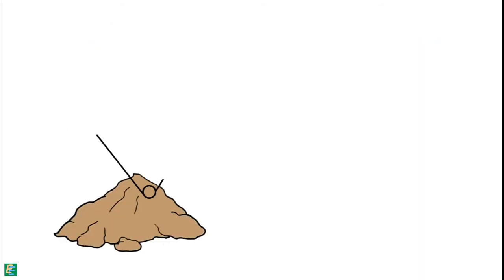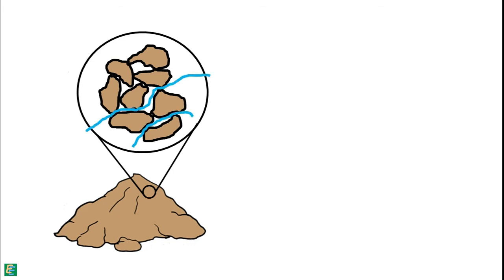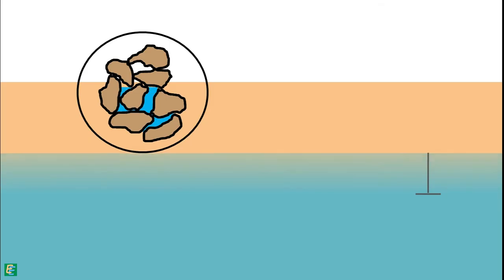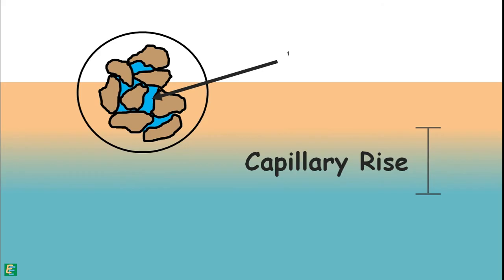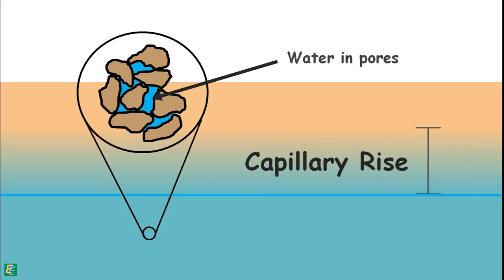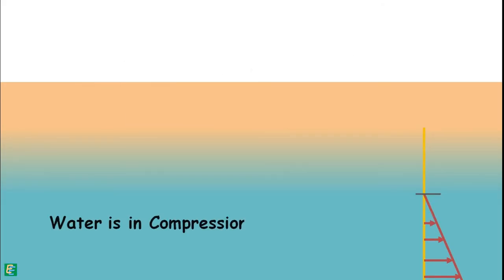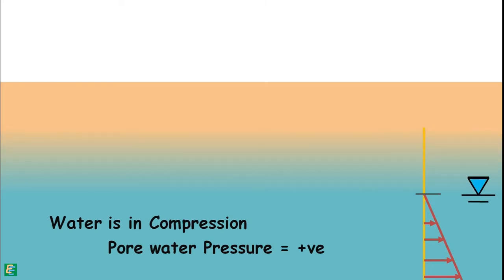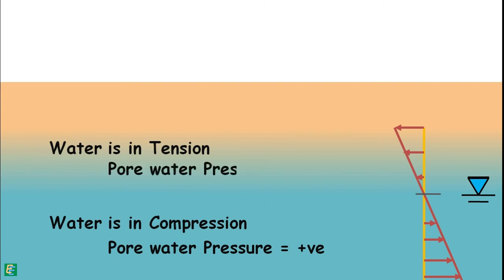A soil mass also consists of a number of interconnected voids that act as capillary tubes of varying diameter. Because of the capillary effect, water in the soil rises above the water table in these voids up to some height. The water present in soil pores below the water table is in compression and pore water pressure is positive. The water that rises above the water table because of capillary effect is in tension and pore water pressure is negative.